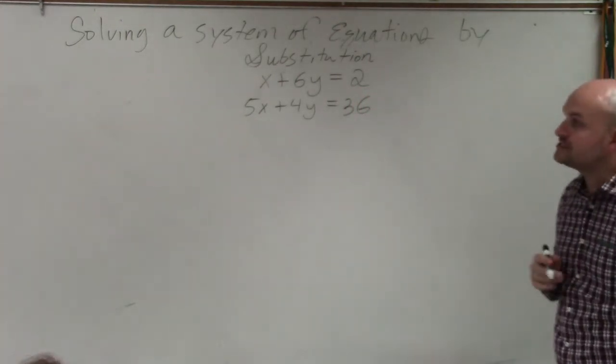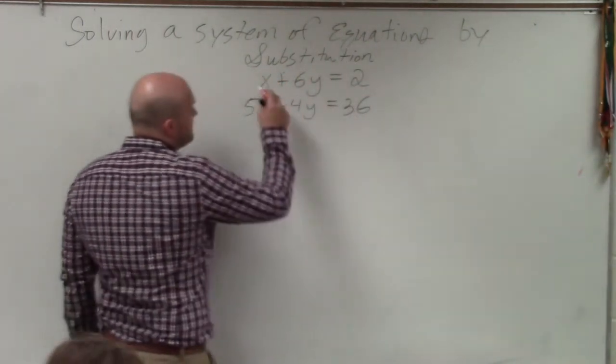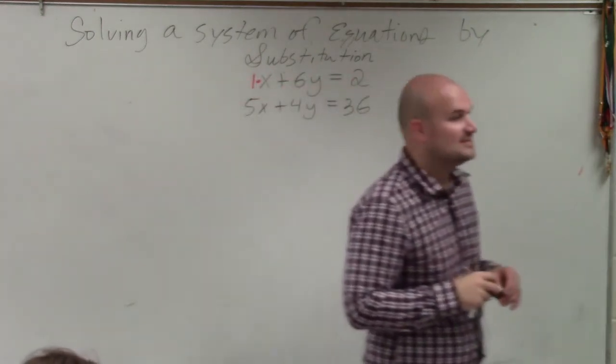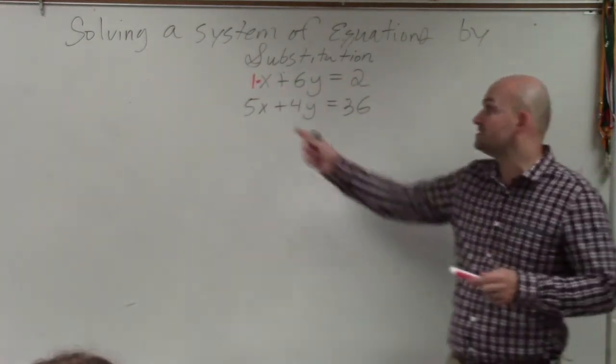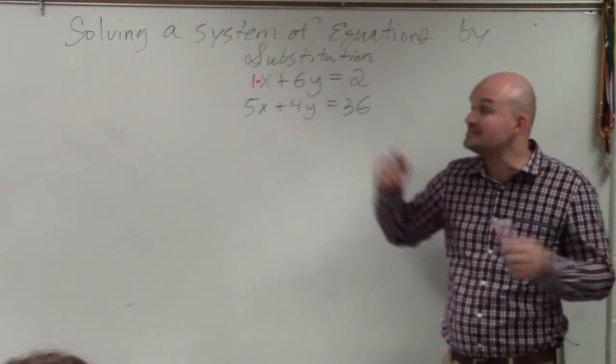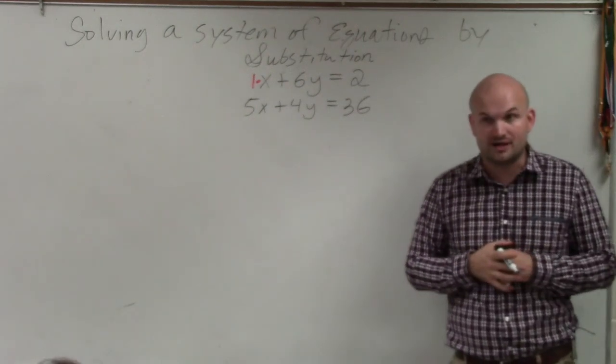So the first step is to identify a variable with a coefficient of 1 or negative 1. So remember, the coefficient is the number that is multiplied by your variable. So you guys can see, as I just entered in a 1, because if there's no number there, we can understand that 1 is in its place. So therefore, we can see that the variable x is the only variable that has a 1 or negative 1.